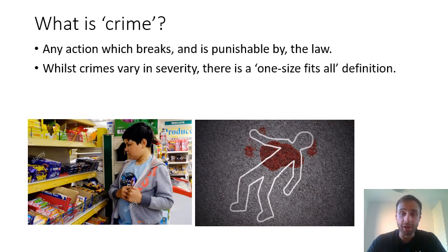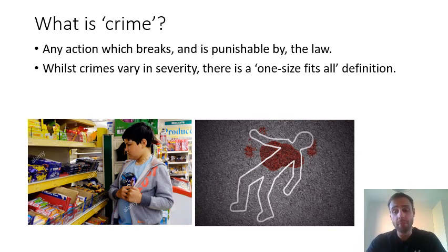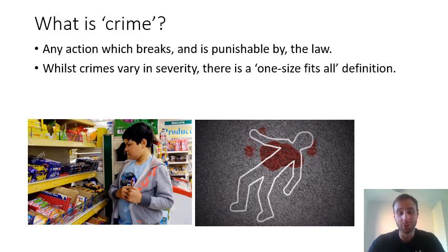Whilst crime does vary in severity, there is that one-size-fits-all definition. You might have a child stealing some sweets in a newsagent and you might have a murder. Obviously, one of these crimes is more severe than the other. Stealing sweets is just unforgivable, but it's still a crime. One-size-fits-all: punishable by law.